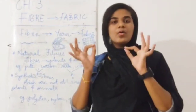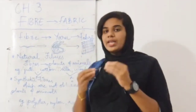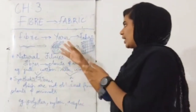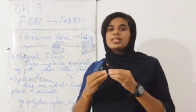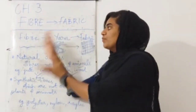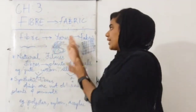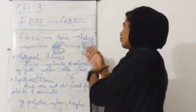Fiber is the base unit. From fiber we make yarn, and a yarn is used to make fabric. So from fiber we make yarn, and from yarn we make fabric.